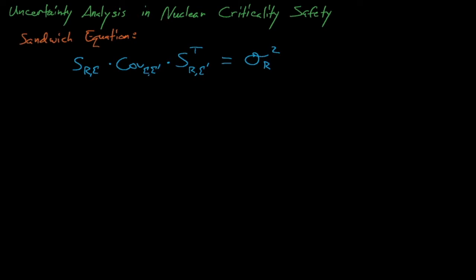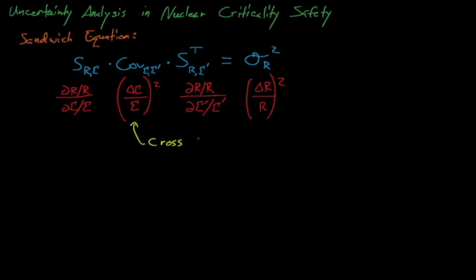This matrix math might seem complicated, but it's easier to follow if you consider the units of each term in this expression. When you do that, you see that the d sigma over sigma term in the sensitivity coefficients cancels out with the delta sigma over sigma uncertainty from the covariance matrix, leaving us with only delta r over r for our response.